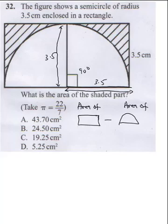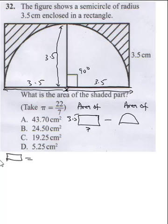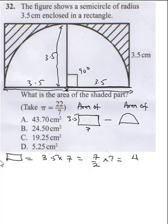From here to here is 3.5, so from here to the other side is also 3.5, meaning the total length is 7 cm. So our rectangle is 7 cm by 3.5 cm. The area of the rectangle is 3.5 times 7, which is 7 over 2 times 7, giving 49 over 2.